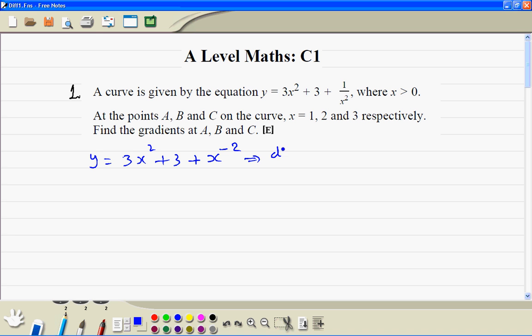Now we differentiate. So dy/dx is equal to 3 times 2, so 6x, then we differentiate 3, that's nothing, then we have minus 2x to the power minus 3.